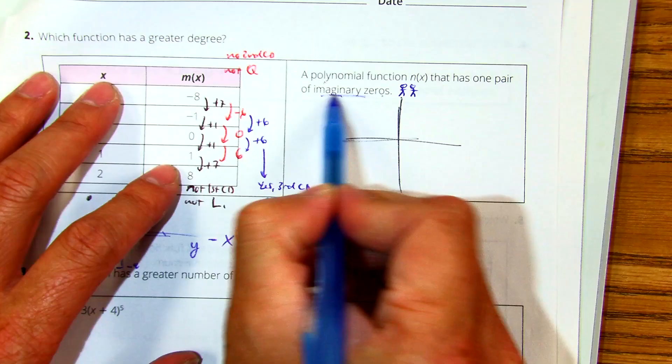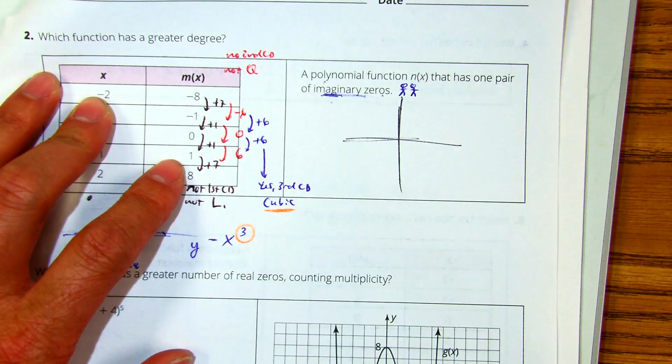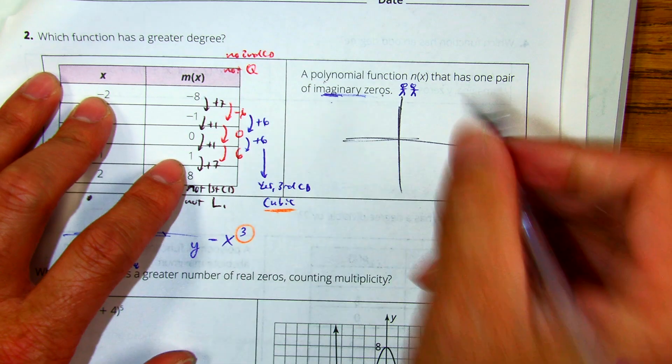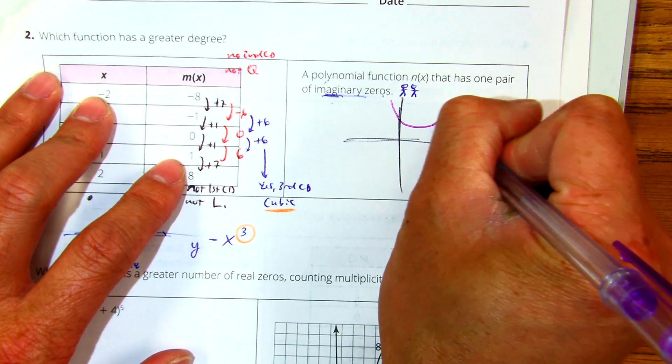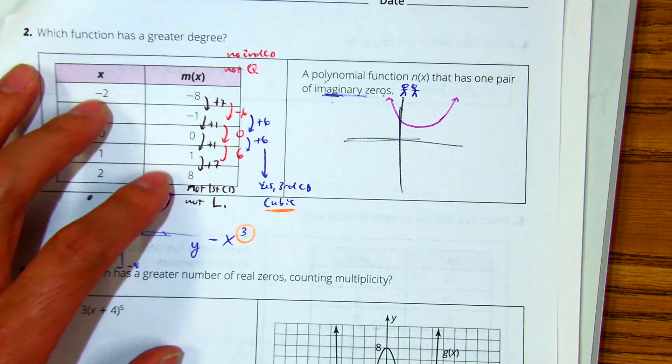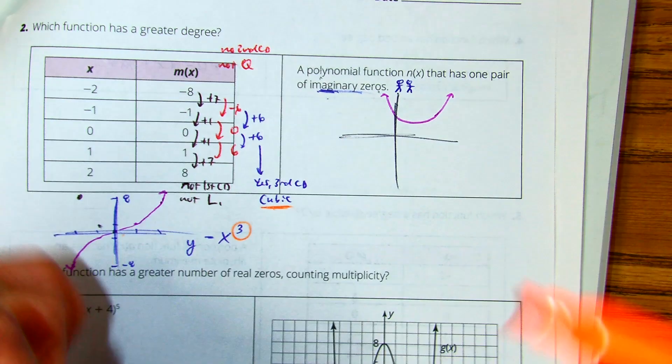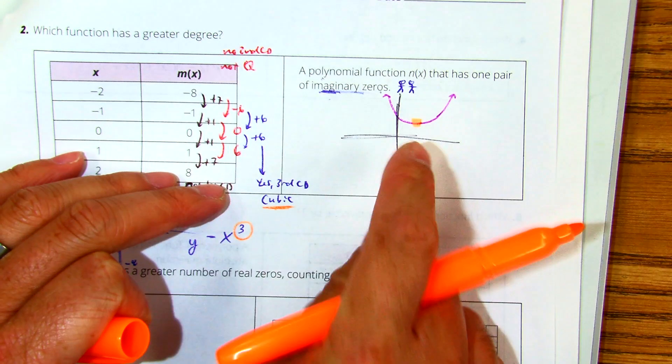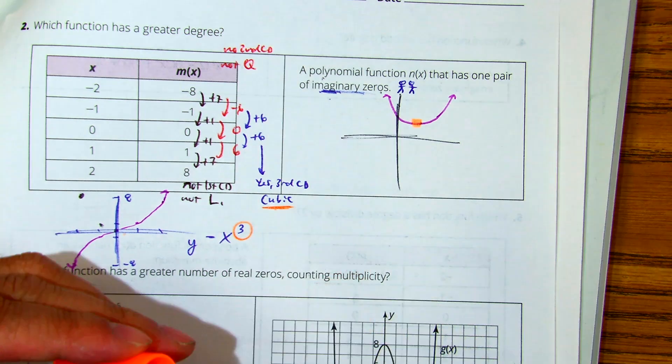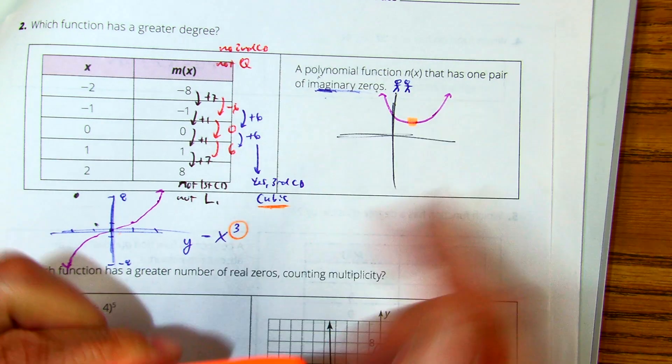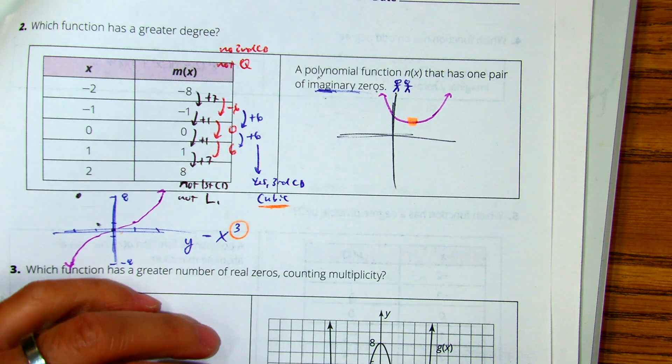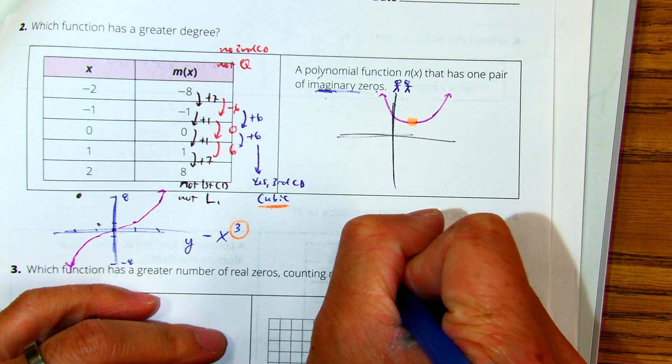Pairs is how many? And imaginary means it doesn't touch the x-axis. So it doesn't matter if you have a graph that opens up or down. This represents my pair. So, what degree do we have here? This is x to the second power.